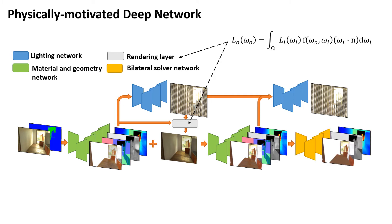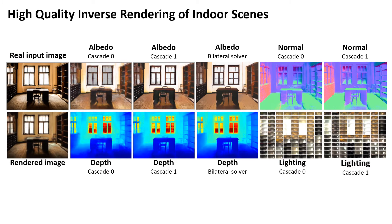We also include a trainable bilateral solver for post-processing. Trained on our large-scale synthetic dataset, our network achieves accurate inverse rendering results, even on real data. We observe that the cascade structure progressively recovers more details, and the bilateral solver removes noise in the predictions.